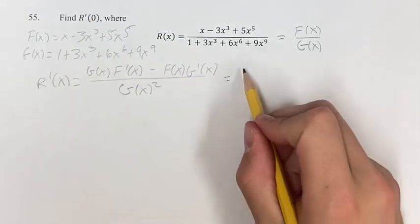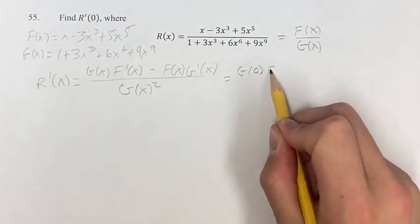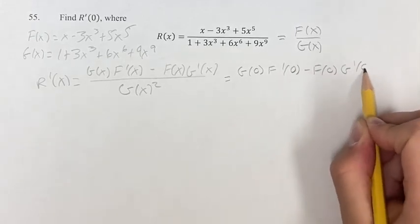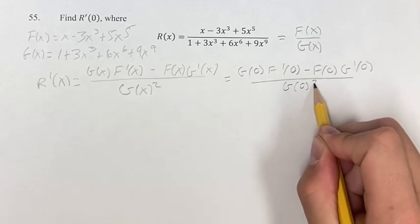At x is equal to 0, this is going to be g of 0 times f prime of 0 minus f of 0 times g prime of 0 over g of 0 squared.